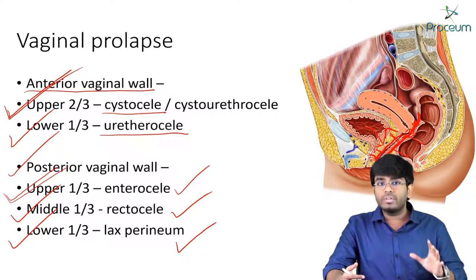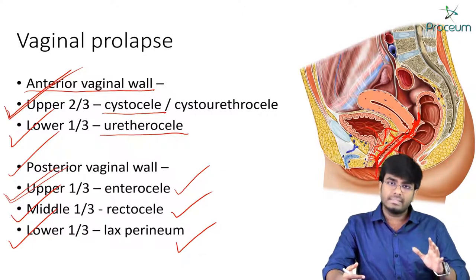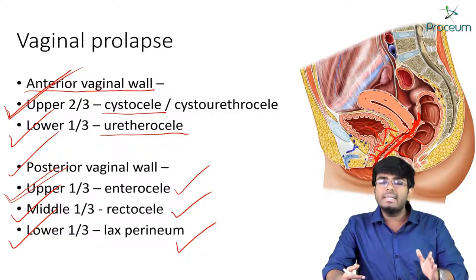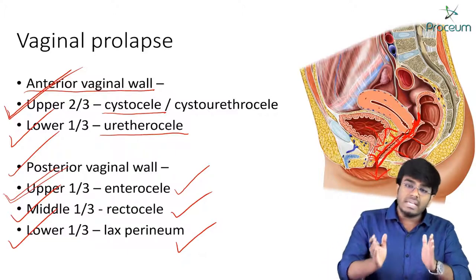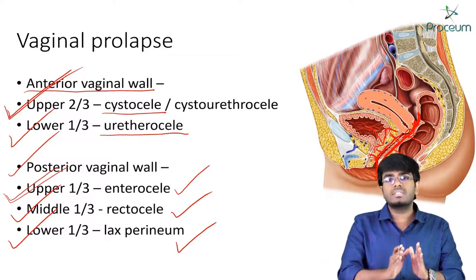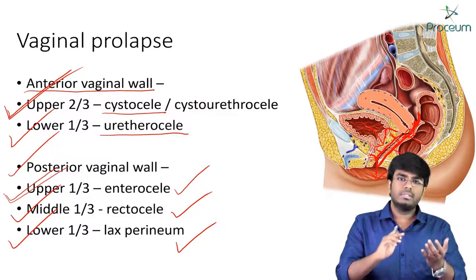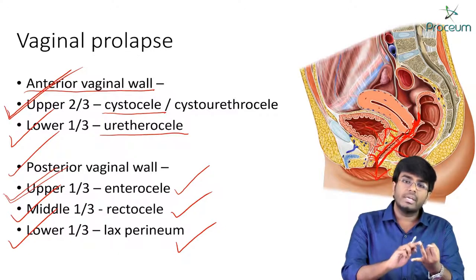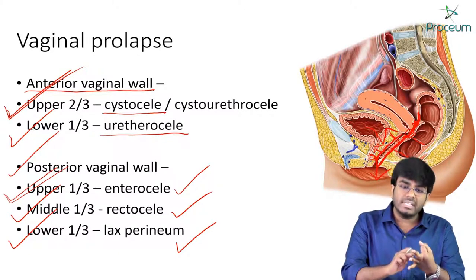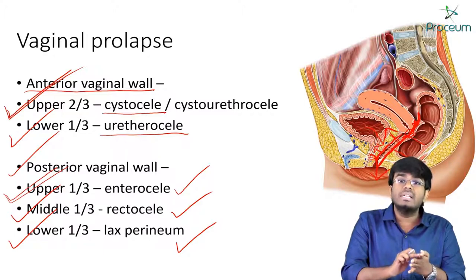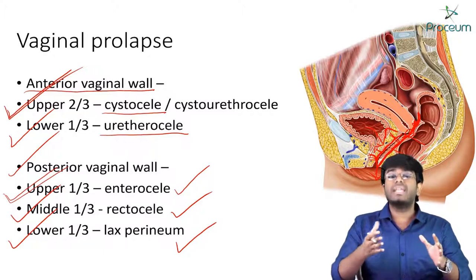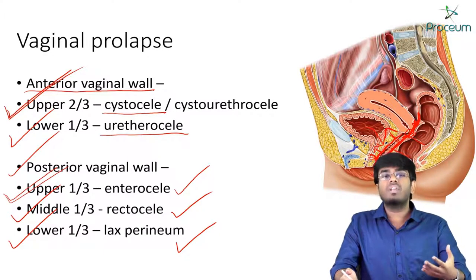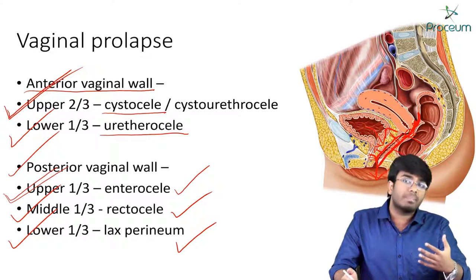The important point is that prolapse of the anterior and posterior vaginal walls are associated with cystocele, urethrocele, enterocele, rectocele, or lax perineum — depending on which part of the vaginal wall is prolapsing.